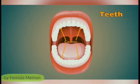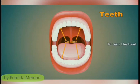Canine: Each is located adjacent to the incisor. There are two canines in each jaw. Their primary role is to tear food.